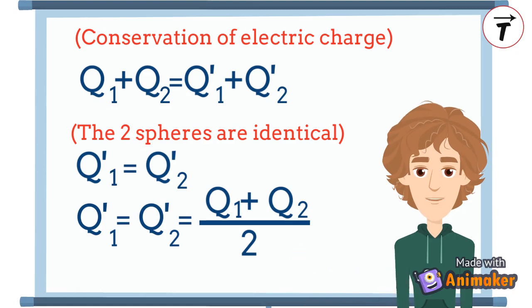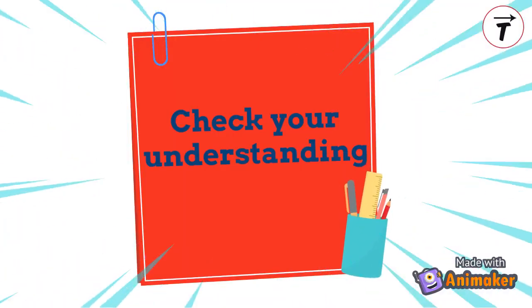If the two conductors are identical, the charge is distributed equally between them: q1 prime equals q2 prime equals q1 plus q2 over 2. Now let's check your understanding.